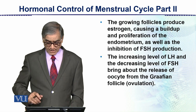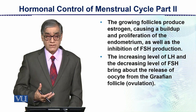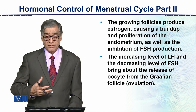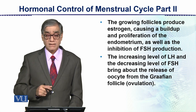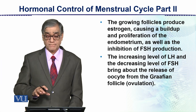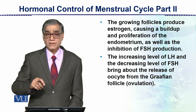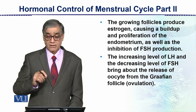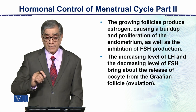The growing follicles produce estrogen. The estrogen causes a build-up and proliferation of the endometrium, as well as the inhibition of FSH production. So as estrogen increases in the blood, its negative feedback inhibits FSH production.